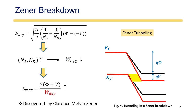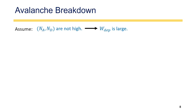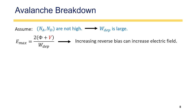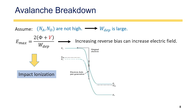This type of current flow in reverse bias condition — caused by quantum mechanical tunneling — is called Zener breakdown or Zener tunneling. Zener breakdown happens when we have a heavily doped PN junction, because heavy doping creates a narrow depletion region, enabling tunneling. When the junction is lightly doped, the depletion region width will be large, and a different mechanism — impact ionization — will occur instead.